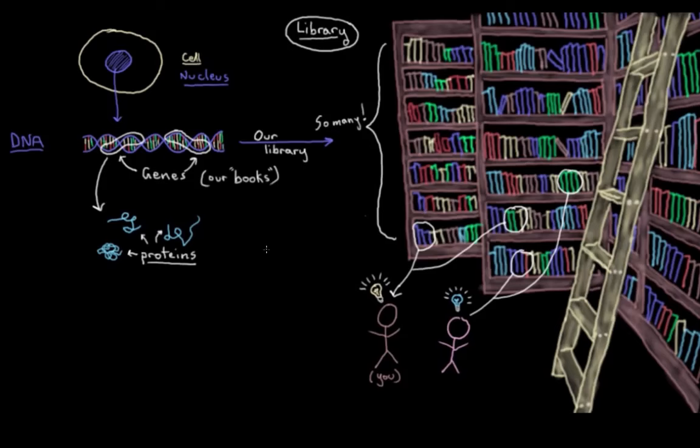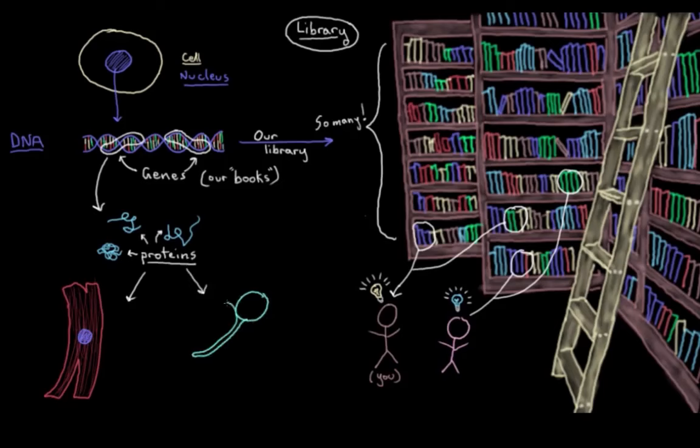So, with the exception of the red blood cells which lack nuclei, every single somatic cell in your body contains the exact same DNA. Yet this muscle cell here looks and acts differently to this neuron here. And that's because they're each reading different books in our DNA library. They're using different genes to make their proteins.